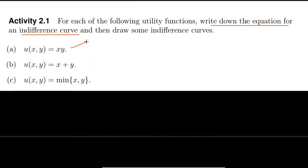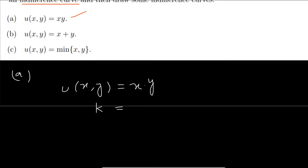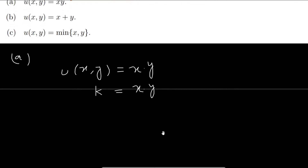The first scenario, option A, is: utility of x and y equals x times y. Since an indifference curve shows the same level of satisfaction at each combination, we can write utility of x and y as a constant k — meaning the value of utility remains the same. So we write: k equals x times y.